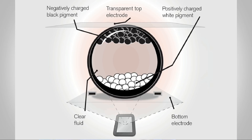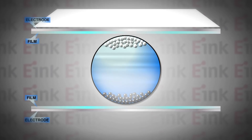Now, there are particles inside this capsule. These particles are electrically charged. We are thinking about a bubble — this bubble is positively charged with white particles, and negatively charged with black particles. That is a clear fluid. This is the structure.